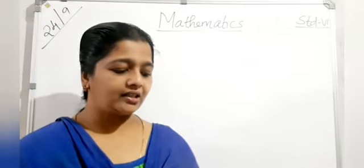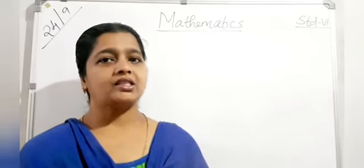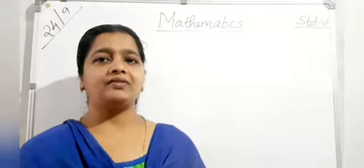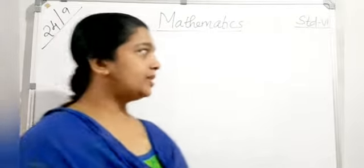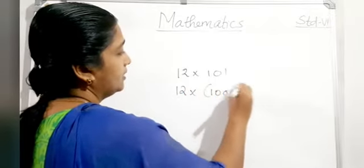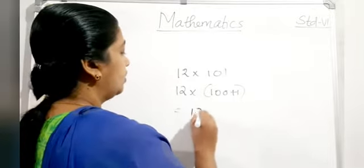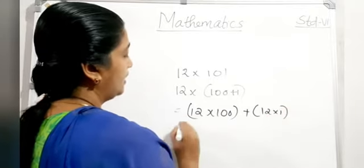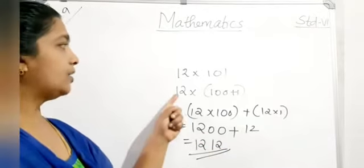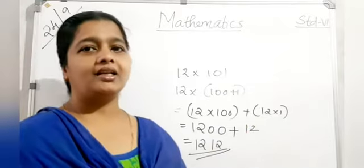Some properties of whole numbers: the closure property — the sum of any two whole numbers is also a whole number; closure holds for multiplication too. Commutative: A × B = B × A. Associative: for three numbers added or multiplied, we get the same result. Distributive property example: 12 × 101 = 12 × (100 + 1) = 12 × 100 + 12 × 1 = 1200 + 12 = 1212.